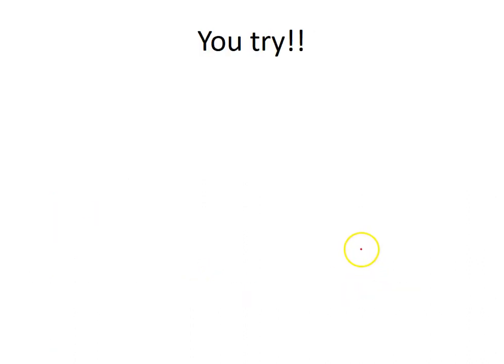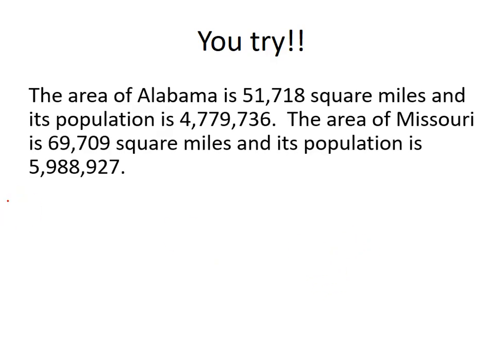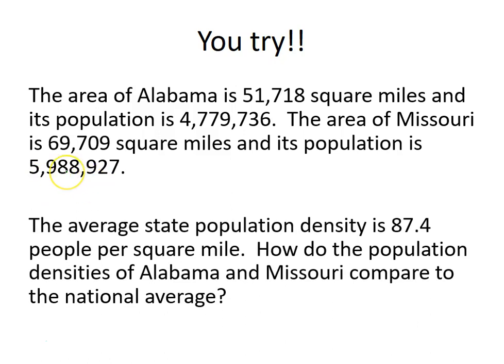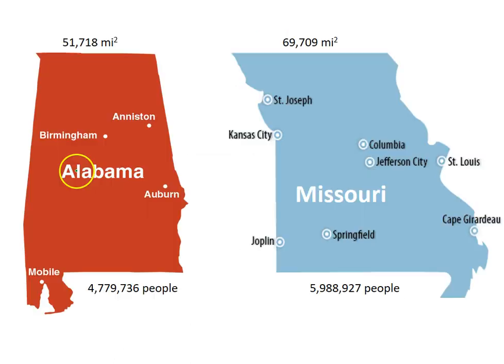The area of Alabama is 51,718 square miles and its population is about 4.7 million. The area of Missouri is 69,709 square miles and its population is about 5.9 million. The average state population density is 87.4 people per square mile. The question asks how the population densities of Alabama and Missouri compare to the national average — this is a multiple choice question like you'd see on an EOC or DDA.